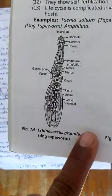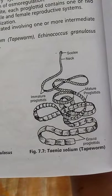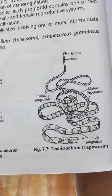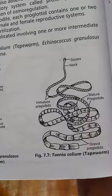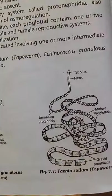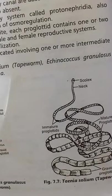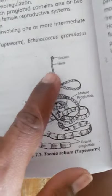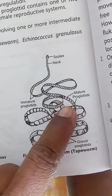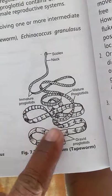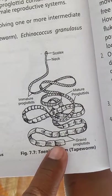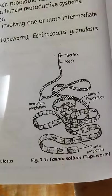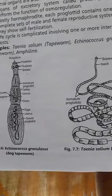Echinococcus granulosus is the first example and Taenia solium is the tapeworm. You can observe the scolex, neck, and remaining body parts. The strobila is divided into immature proglottids near the neck region, which become mature proglottids; towards the posterior region, these become gravid proglottids that detach by apolysis.